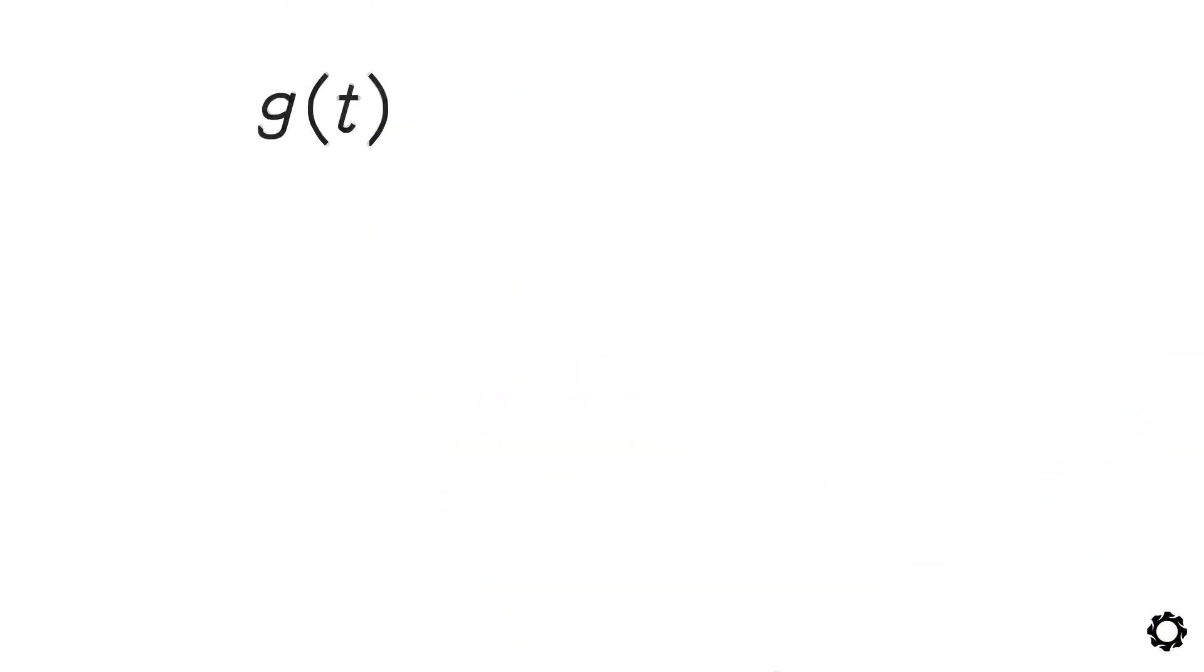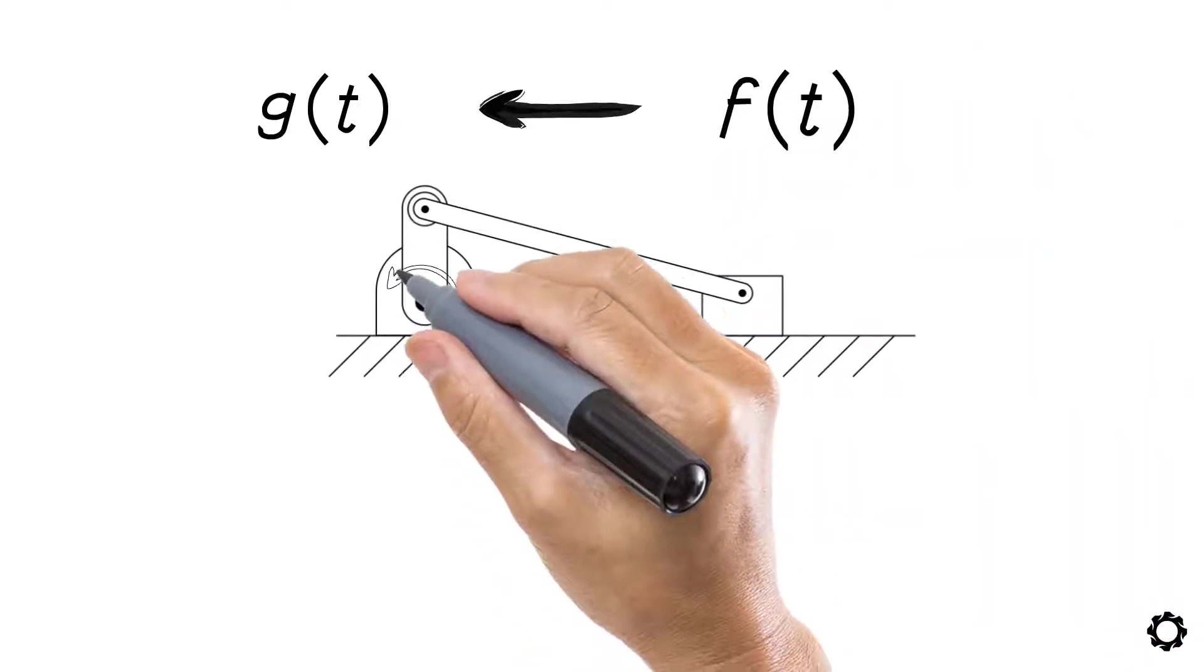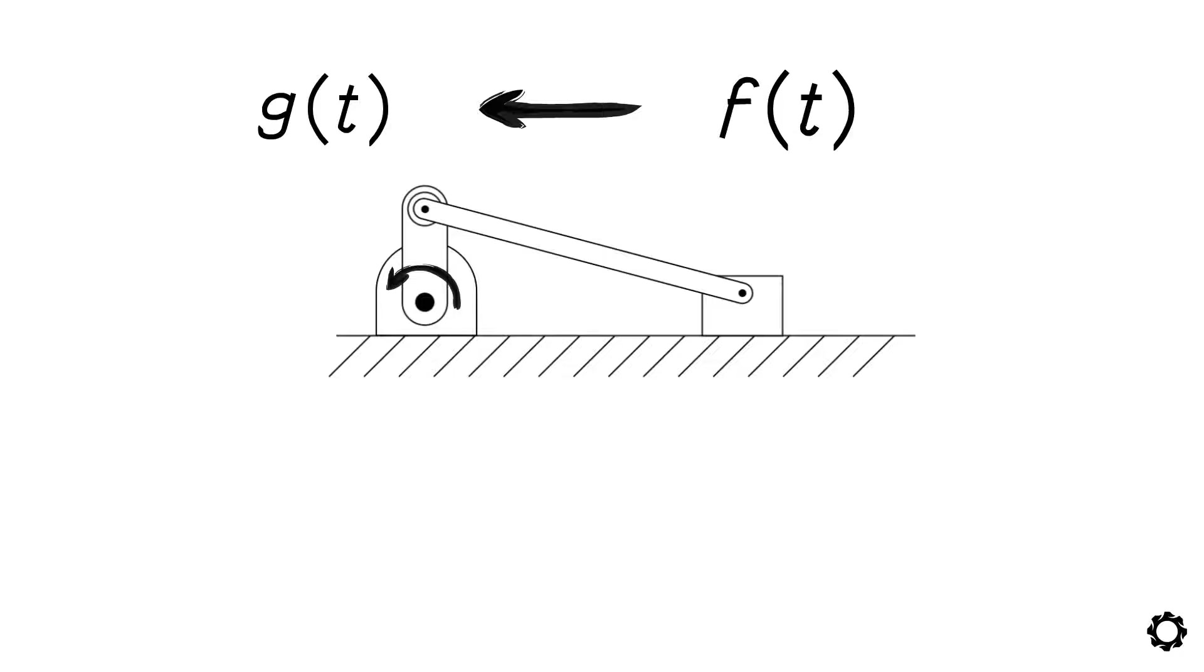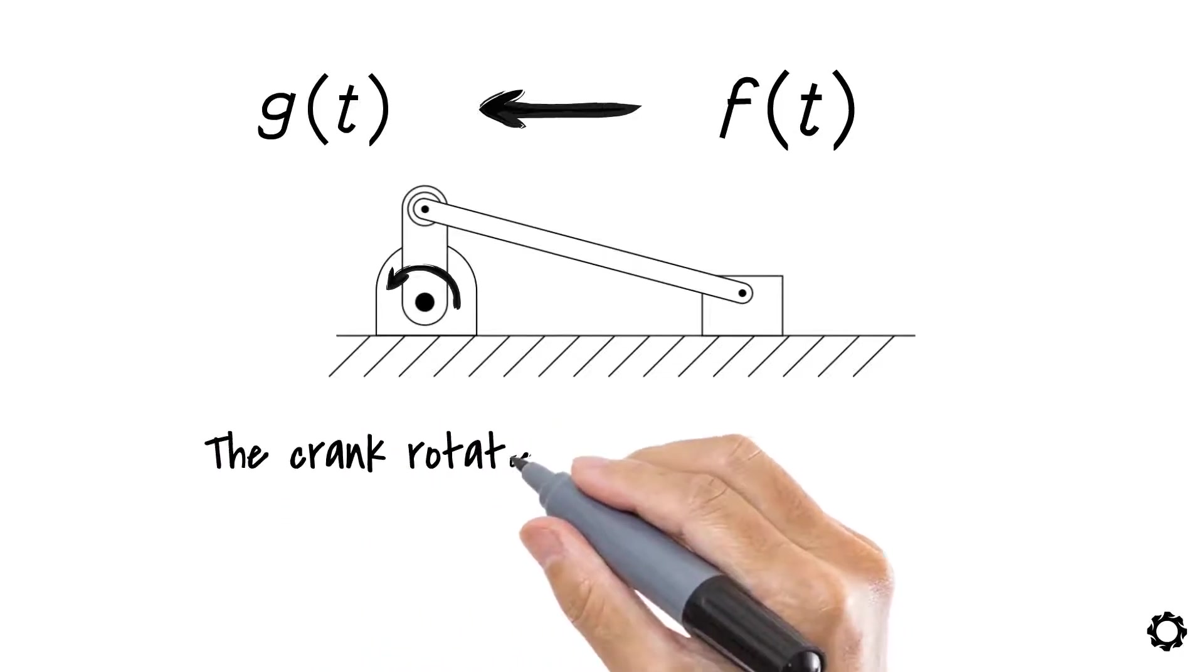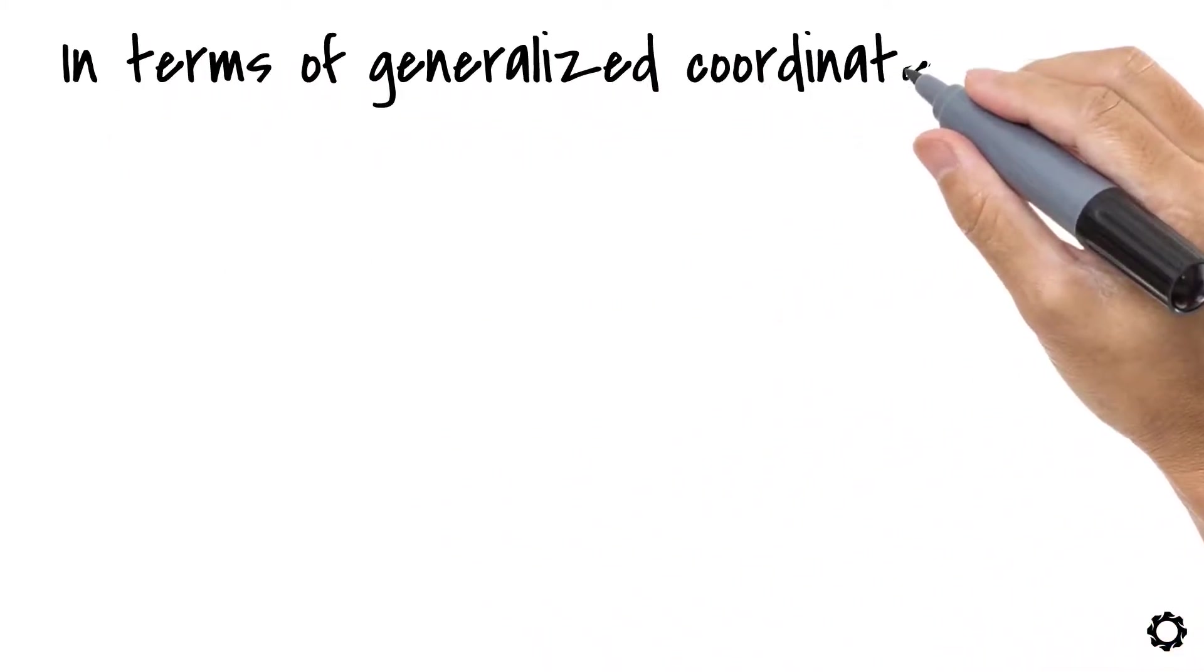We said that g came from a non-specified function f, representing how the rotation velocity of the crank behaves. At this point, let's say the crank rotates at a constant velocity. If this is the case, then the velocity of the crank will be represented as, which leads to having in terms of generalized coordinates.